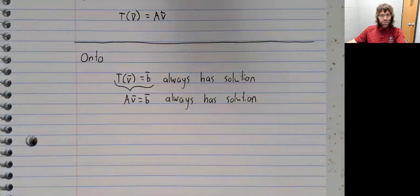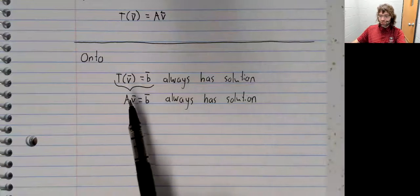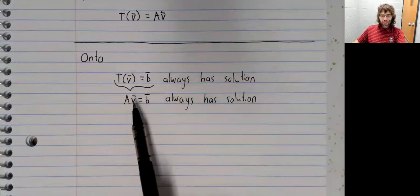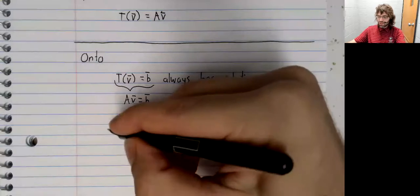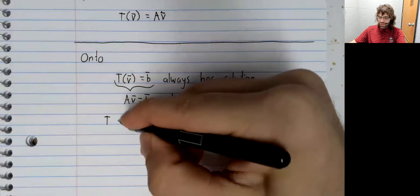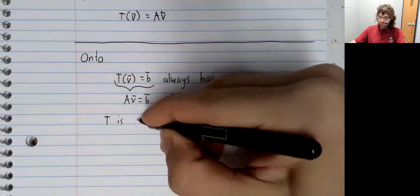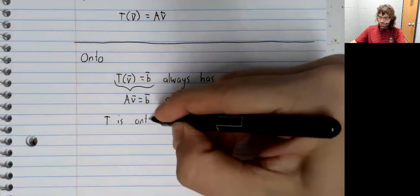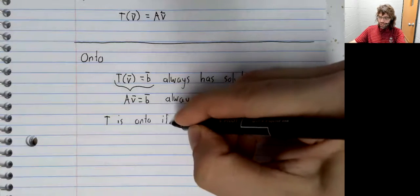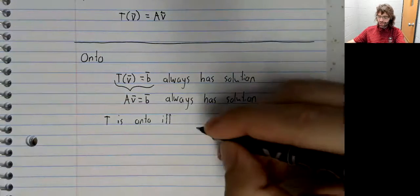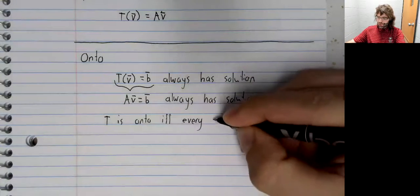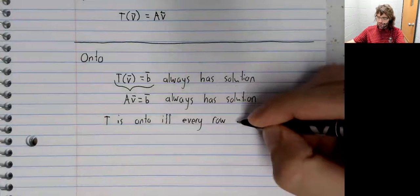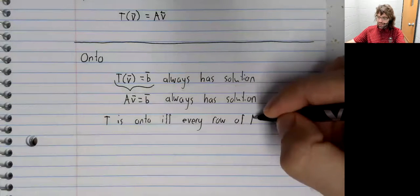And we've already stated a theorem answering the question of when this matrix equation always has a solution. T is onto if and only if every row of A